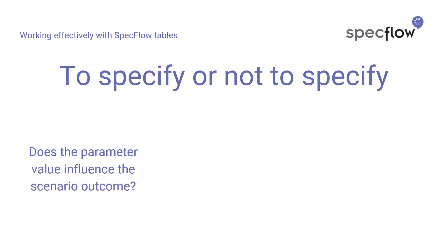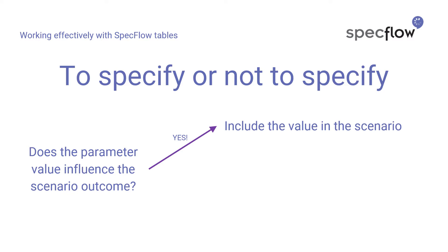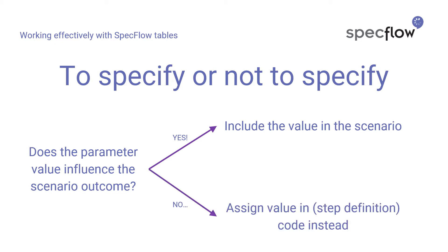In the previous video, I already introduced a rule of thumb you could use to decide whether or not to include a specific column or piece of data in a data table. If a specific value is important to the outcome of the scenario, by all means specify it. But if a parameter does not have a direct effect on the behavior being described or the outcome of the scenario, it's probably better not to include it in your step definition directly, but instead assign a value to that parameter in the implementation of your step definition and hide it from the scenario.